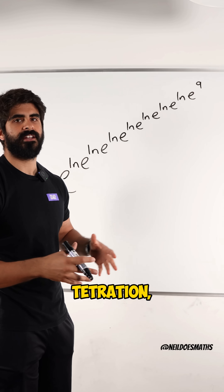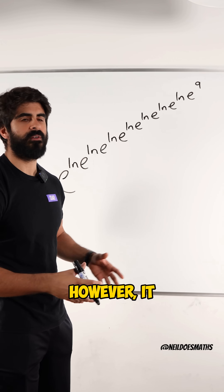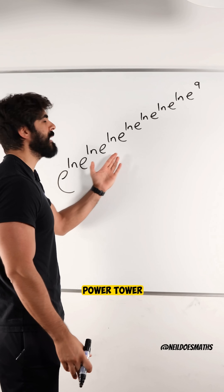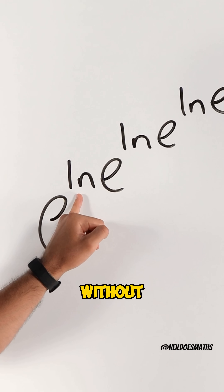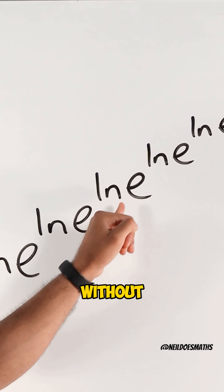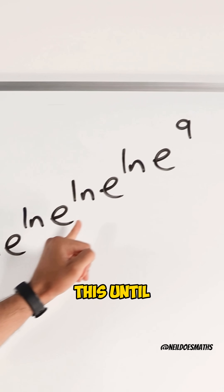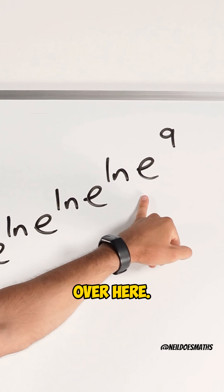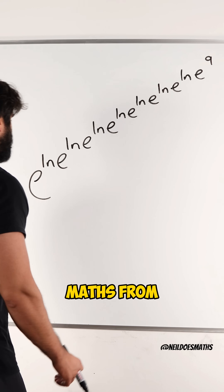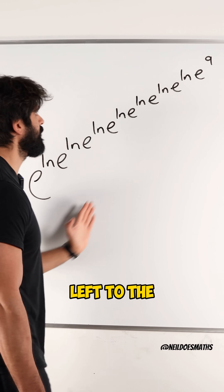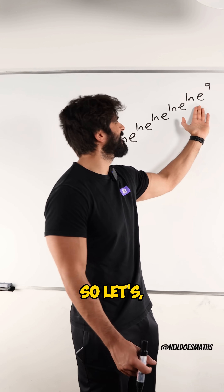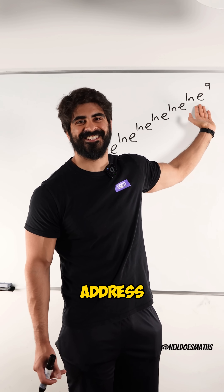Now this is not a tetration. However, it is some sort of power tower, which means I can't do e to the ln without doing e to the ln, without doing all of this until we end up over here. So we need to simplify this bit over here. Even though we usually do maths from left to right, I can't compute left to right until I start with the right. So let's address this bit.